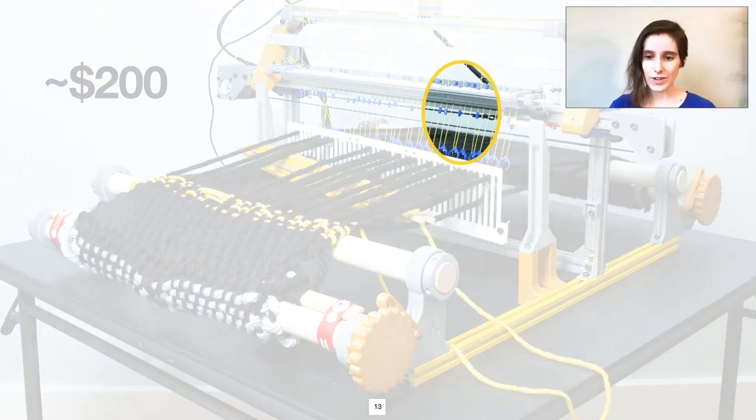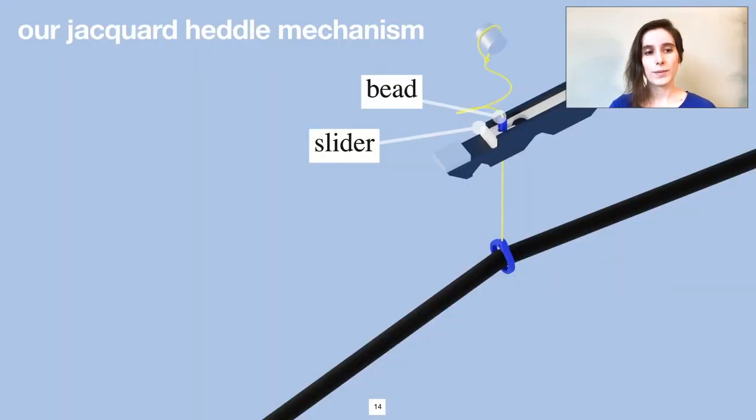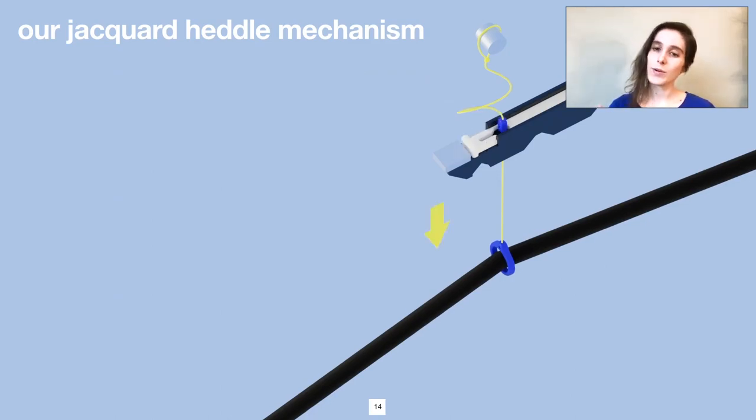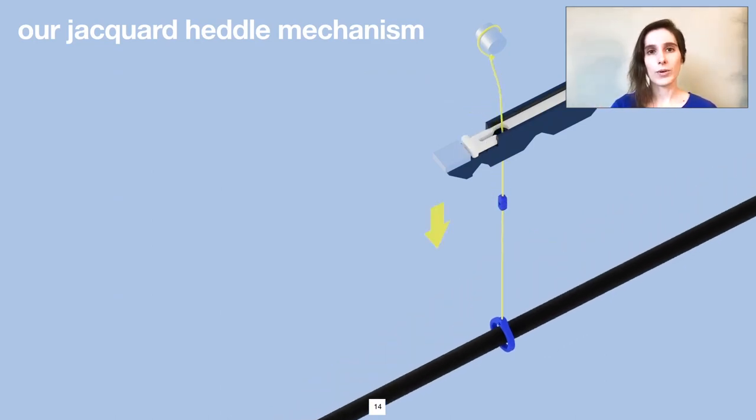The central mechanical innovation is a simple printable bistable switch. Each warp thread is controlled by what weavers call a heddle. In our case, the heddle includes a bead, which can be trapped or freed from a slider. When the bead is trapped, the warp thread is held up. When the slider is tapped forward, the bead can drop and lower its corresponding warp.